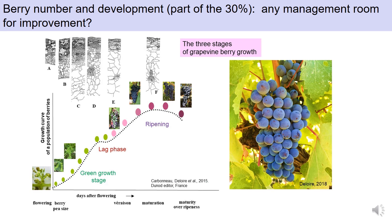When all berries are fixed to the cluster, berry growth and development begins. The first stage is the green growth stage, followed by a lag phase, and then from veraison onwards another growing period. This classical double-sigmoid curve comes from a population of berries. On a per-berry basis it is somewhat different, but the main factors affecting fruit volume are water and nitrogen.